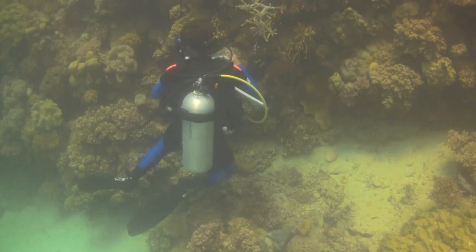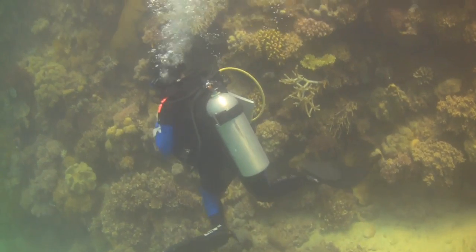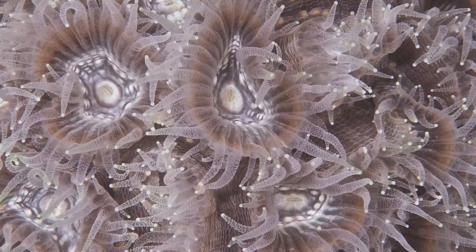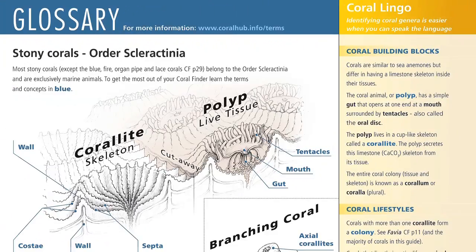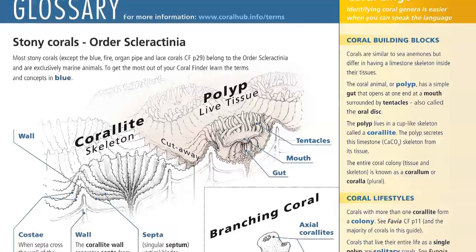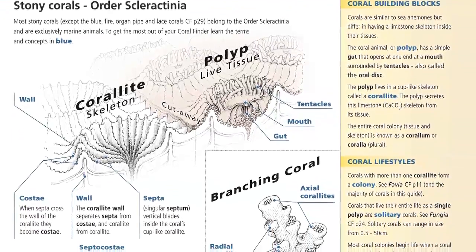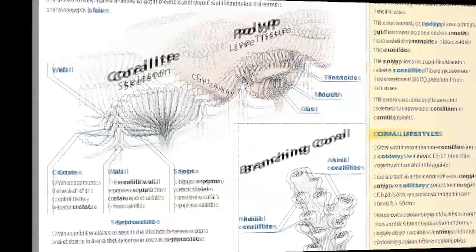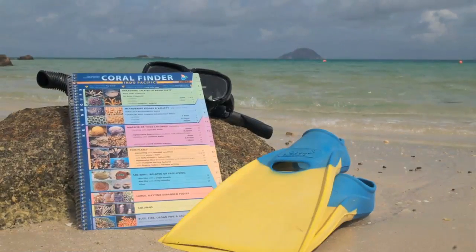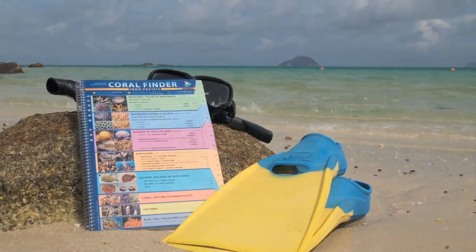Welcome to the fourth training movie in the Coral Finder Toolkit training movie series. In the previous movie we met the coral animal and its skeleton and were introduced to the simplified set of terms used by the Coral Finder to separate coral genera. If you skipped that bit, you'll have to go back eventually. In this movie we'll be introduced to the Coral Finder itself and the principles of how to use it.